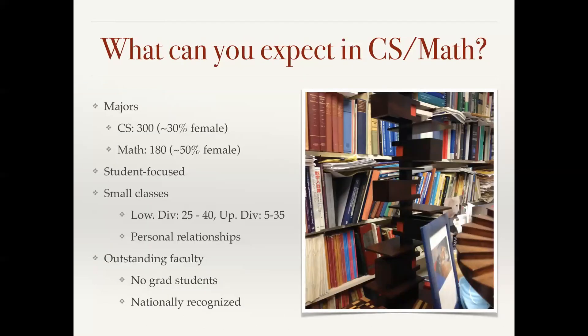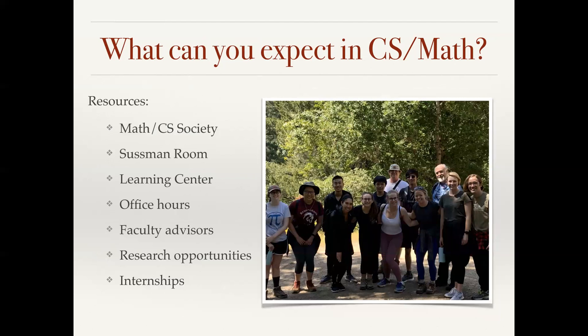So what can you expect in the computer science and mathematics department? We have about 300 computer science majors, 30% of which are female, and about 180 mathematics majors, about half are female. Our department is very student focused. We have small classes with the lower division sizes about 25 to 40, and upper division classes around 5 to 35 students. This gives us plenty of opportunities to form personal relationships with our students. We know their names. We work with them in office hours daily. Our attention is on our undergraduates. We have no graduate students, so we do research with our undergraduates, and our focus is entirely on them. We have nationally recognized faculty who are known throughout the professional organizations in mathematics and computer science.